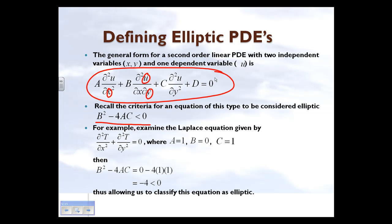Taking a typical example of a Laplacian equation, which is a second order linear partial differential equation, we have a equal to one, b is zero because there is no term of del squared u / del x del y, and c is equal to one. That gives us b squared minus 4ac equal to zero minus four, which is minus four. Since this number is less than zero, we can classify this equation as elliptic.